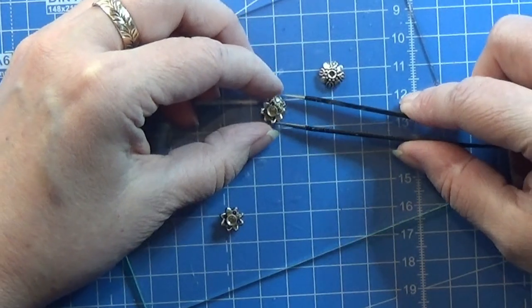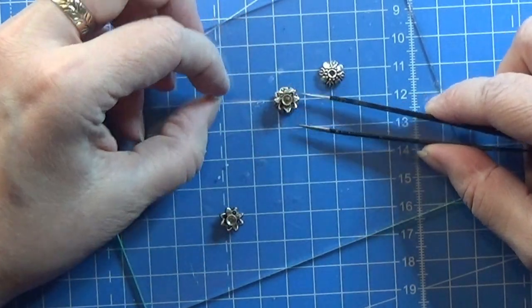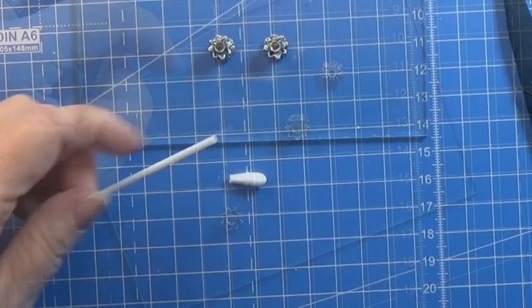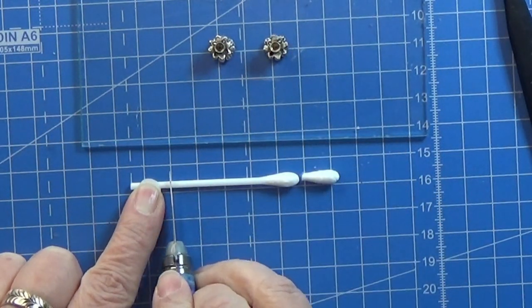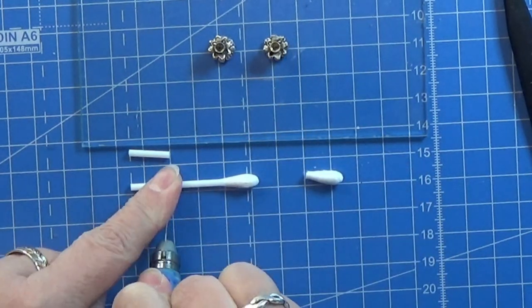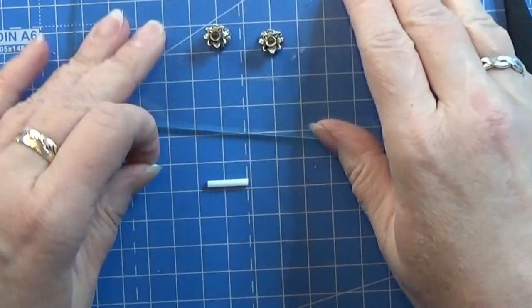For the candle, I take a cotton swab and I cut off the head of it. I am cutting two pieces around one and a half centimeters length, just like this.